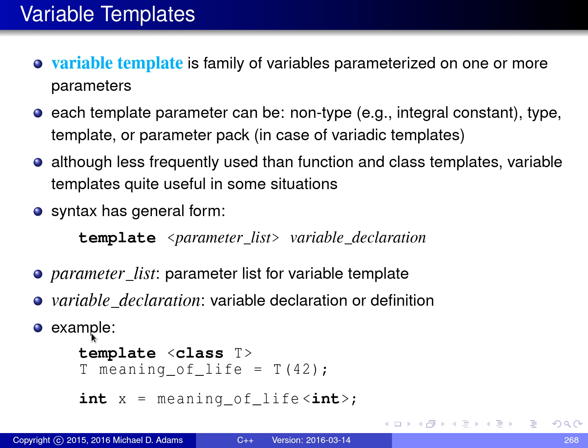So I have an example at the bottom of the slide, a very simple variable template. We have a variable template that takes a single type parameter. It's a type parameter because of the keyword class. So T is a type, which could be a built-in type or a class type.